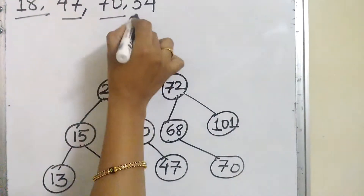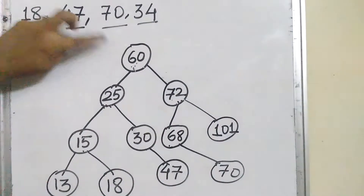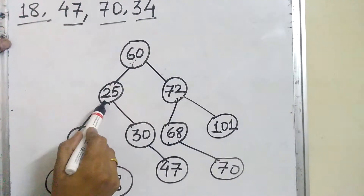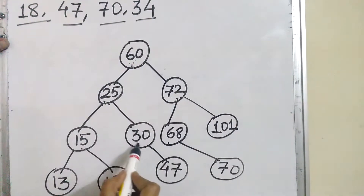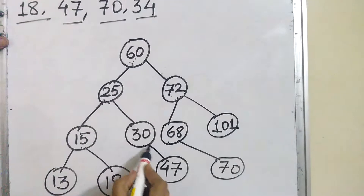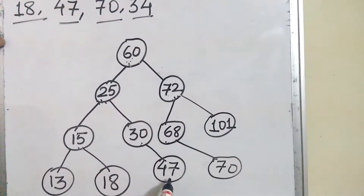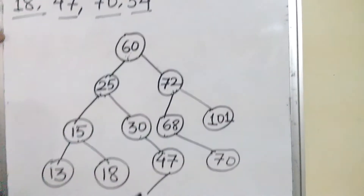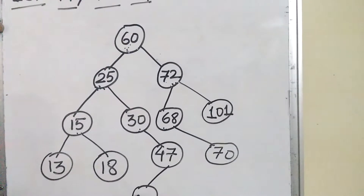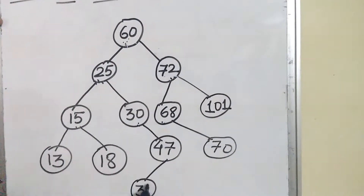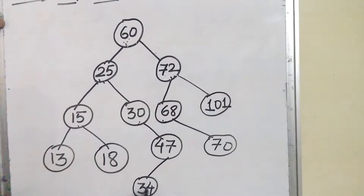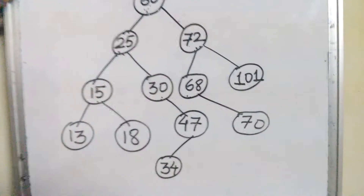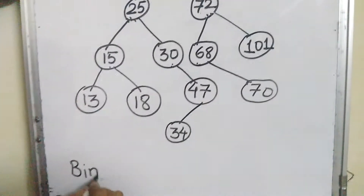Next value is 34. From the root, come left, come right, come right, come left. In this way, the binary search tree is generated.